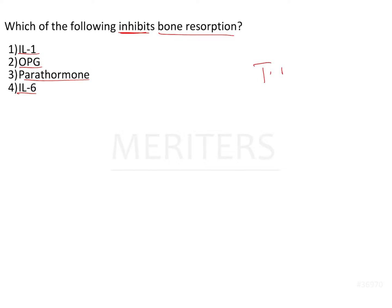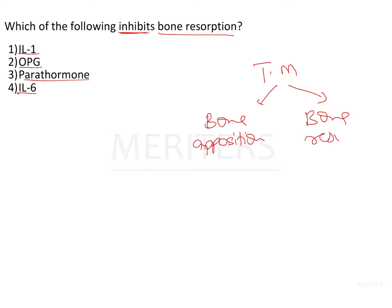In order for tooth movement to take place, one side of the bone has to undergo bone apposition and the other side has to undergo bony resorption. So one side will undergo apposition, one side will undergo resorption, and this is how tooth movement takes place. The cells that bring about apposition are the osteoblast cells, and the cells that bring about resorption are the osteoclast cells.